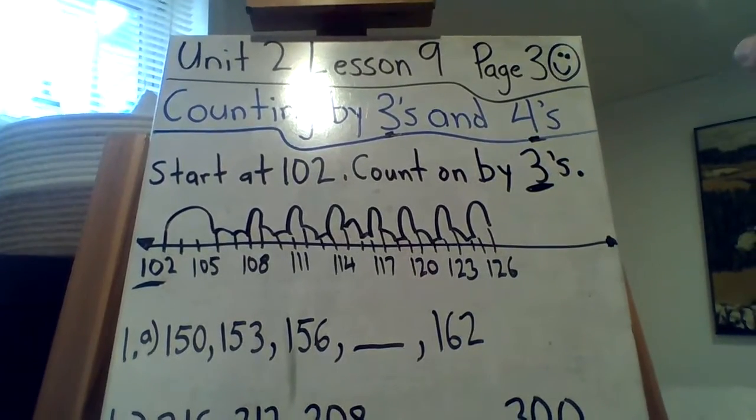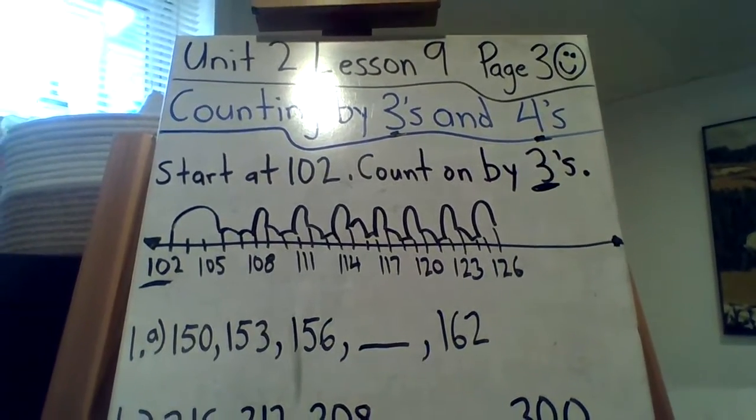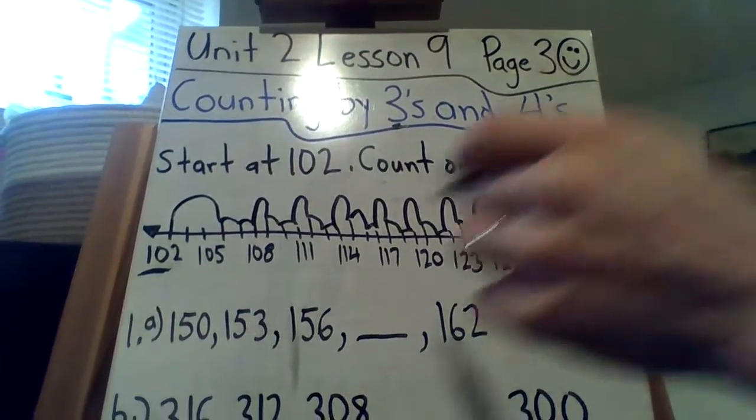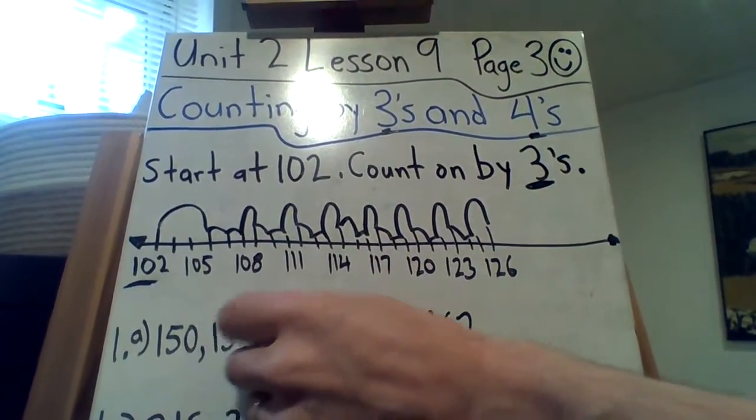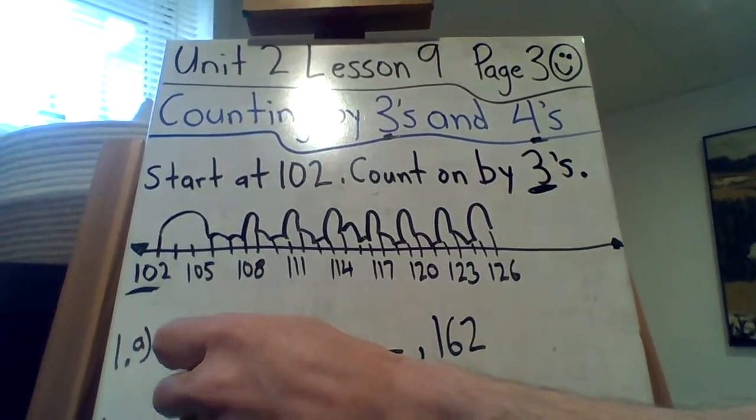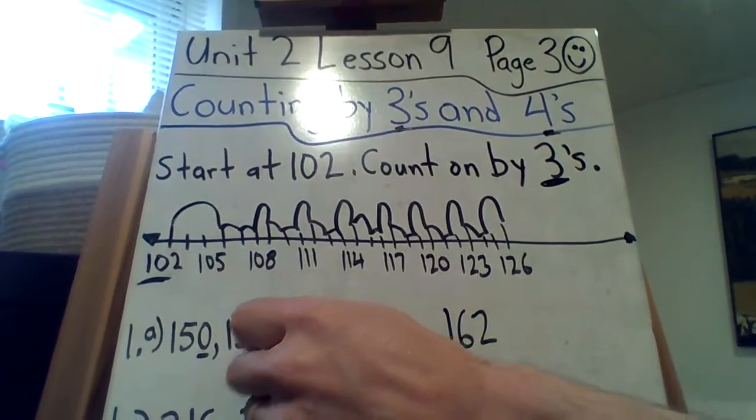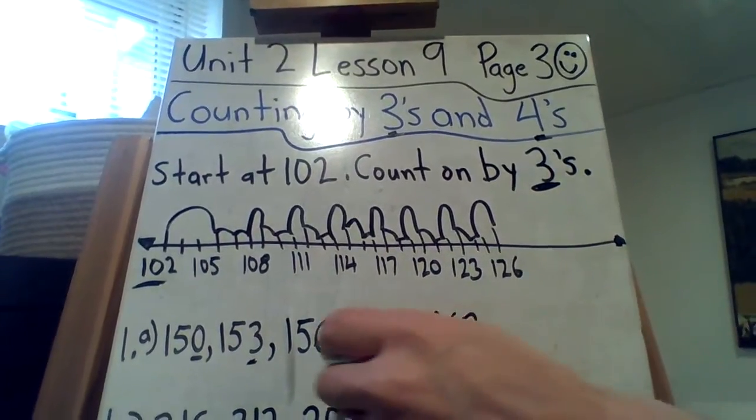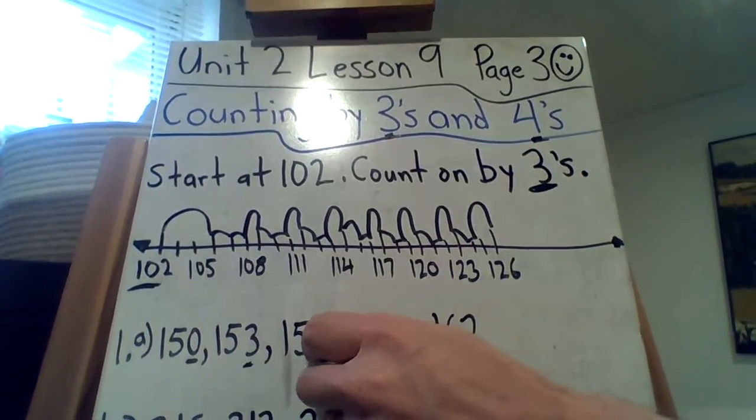So, 1A, it's kind of like finding the pattern. Ooh, it is like a growing pattern, isn't it? 150, 153, 156. Hmm? So, what's the difference between 150 and 153? Hmm, looks like 3. 153 and 156. Ooh, 3 again.